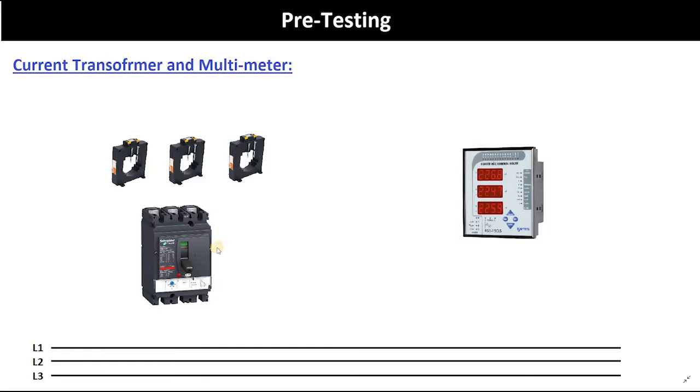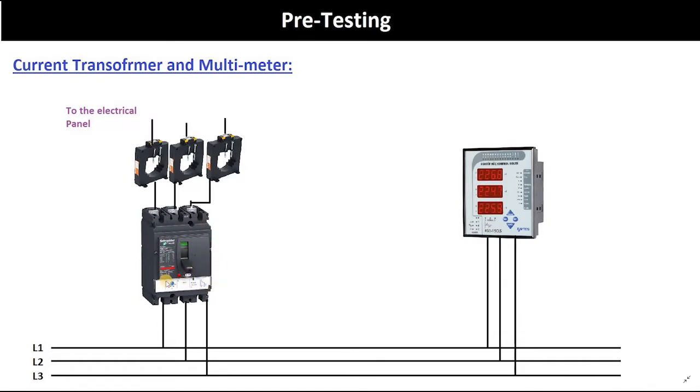So this is my circuit breaker and here are my three lines, the three phases. The main supply coming to our electrical panel is coming through this circuit breaker from these three phases and it's distributing it to the electrical panel.